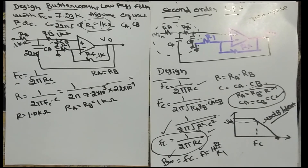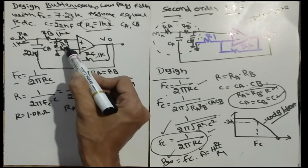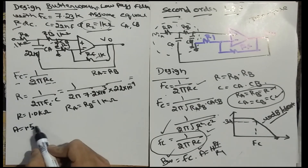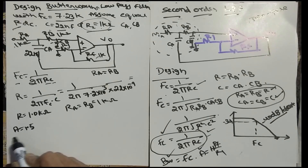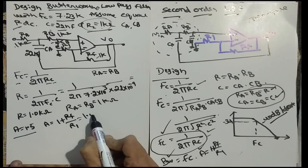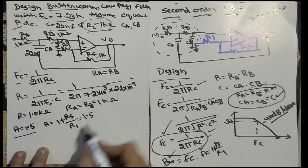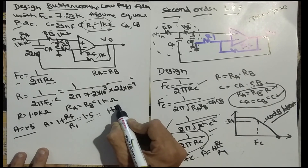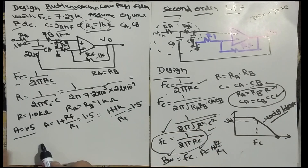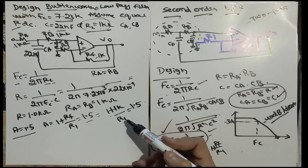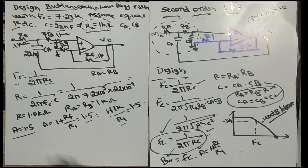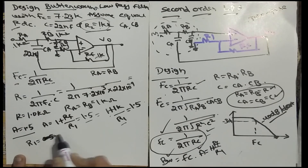Now for the Butterworth condition, the gain must be 1.5 (approximately 1.56). Using the formula A = 1 + Rf/R1 = 1.5, with Rf = 1kΩ, we get 1 + 1k/R1 = 1.5, so 1k/R1 = 0.5, giving R1 = 2kΩ or 500Ω. Therefore R1 = 0.5kΩ (500Ω) satisfies the Butterworth gain condition.